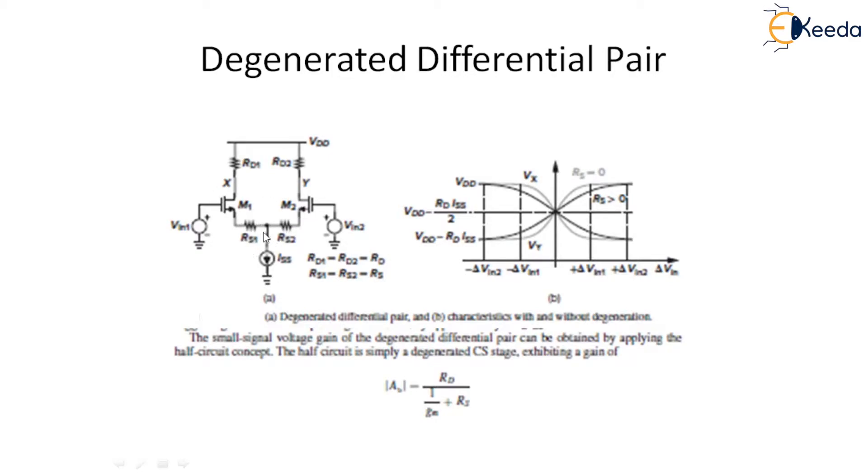We make a simple modification to have this differential pair more linear by just using two degenerative resistances, RS1 and RS2.